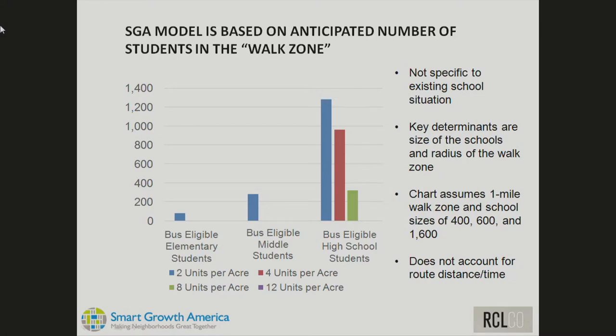This model does not specifically account for the capacity of individual schools or specific bus routing questions — that would be too complicated. It's really just a function of how many students would need to be bussed, not a complete accounting of all costs associated with greater distance.